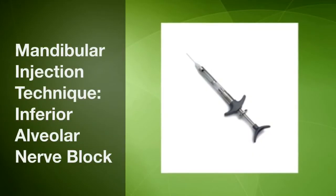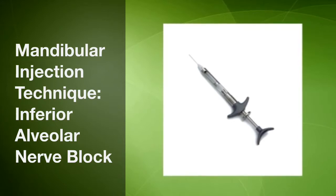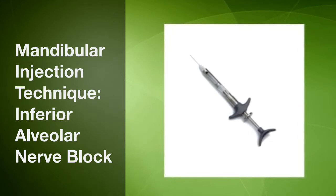The inferior alveolar nerve block is the most commonly used anesthetic technique in dentistry. It is also known as the standard mandibular block or house dog approach.